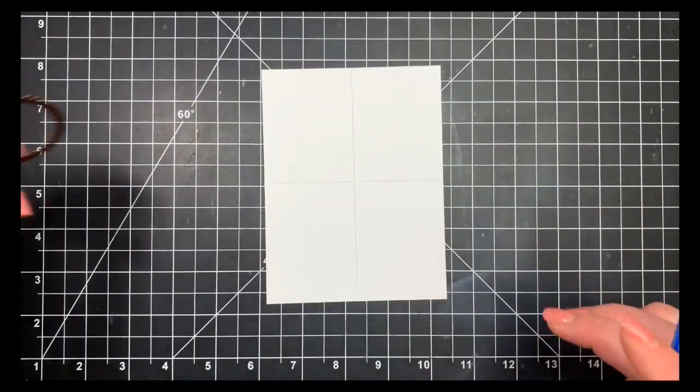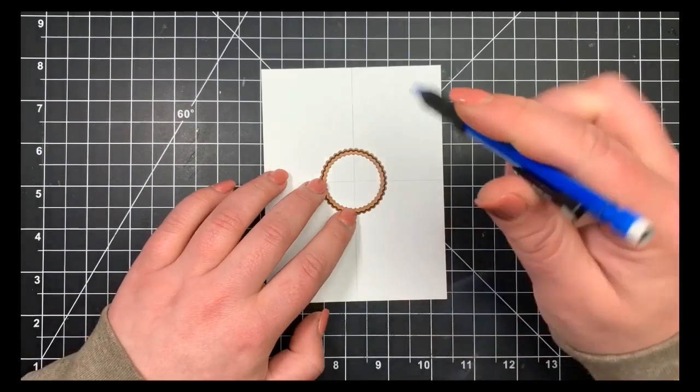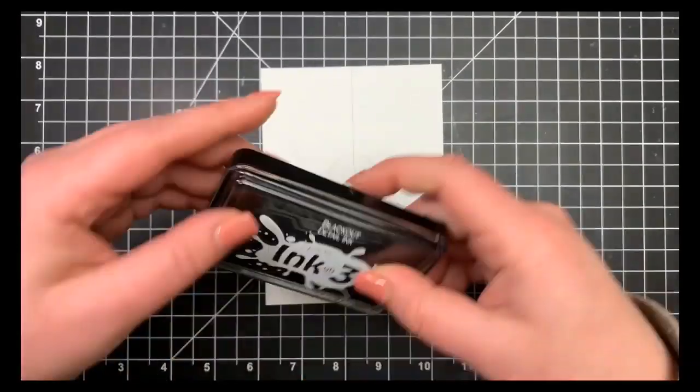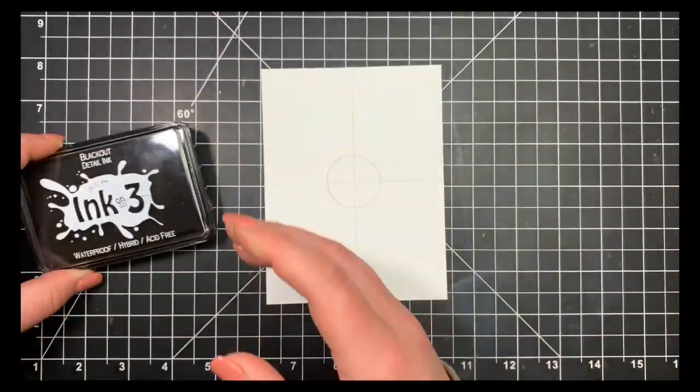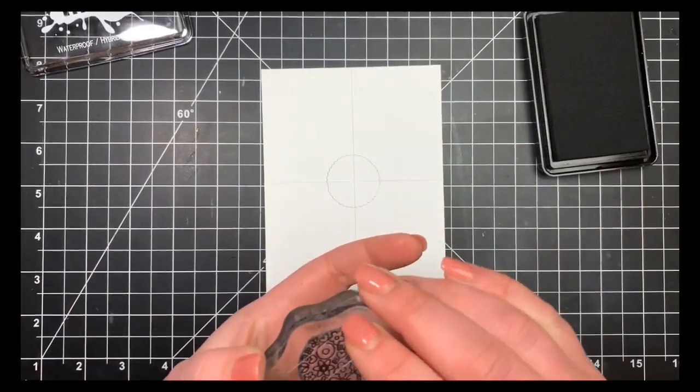I'm taking one of the smallest scalloped circle dies by Spellbinders and tracing that with my pencil. It's not going to be perfect; I just need a guide as to where I'm going to be stamping. I'm going to stamp this image multiple times.